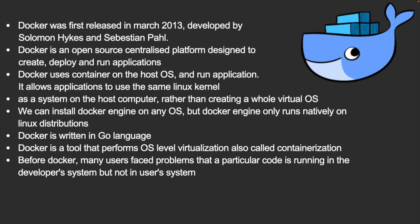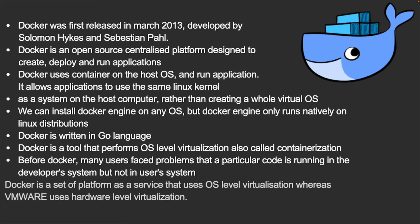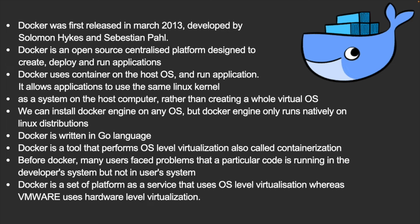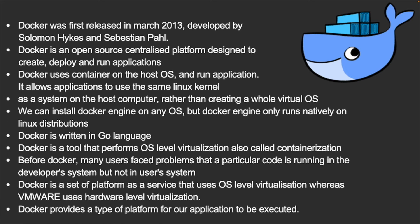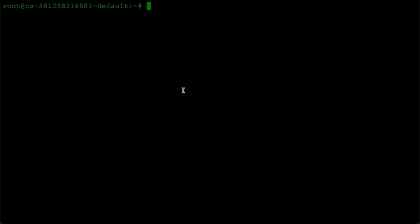Docker is a Platform as a Service that uses OS-level virtualization, whereas VMware uses hardware-level virtualization. Docker provides a platform for applications to be executed — when you run any software using Docker, that application does not run on your local machine directly but runs inside a Docker container.